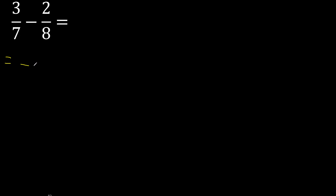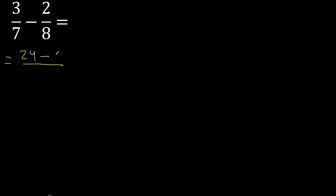First, multiply like this: 8 x 3 equals 24, minus 7 x 2 equals 14. Here, 7 x 8 equals 56.